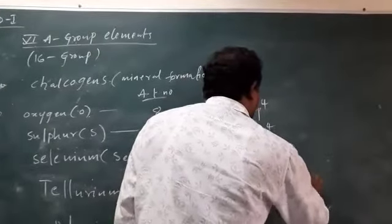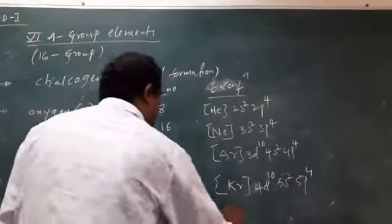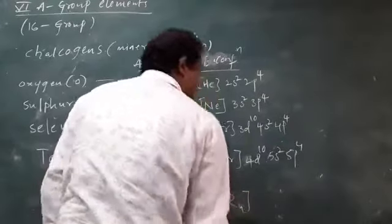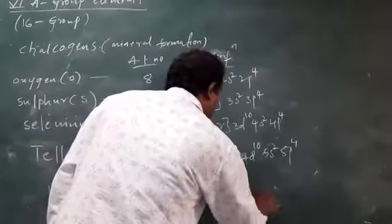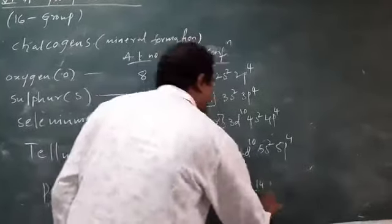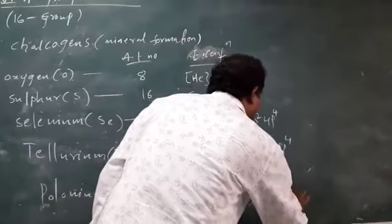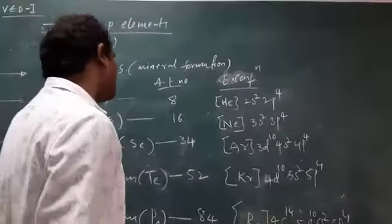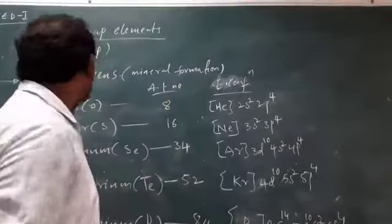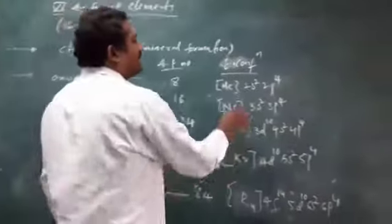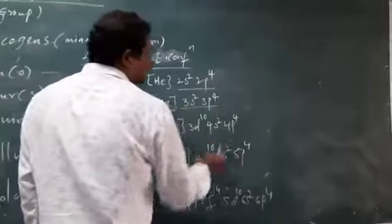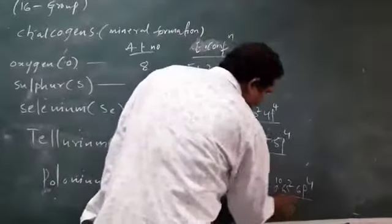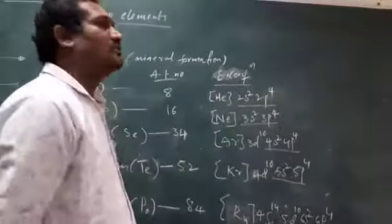And for Polonium after Xenon, 4f14 5d10 6s2 6p4. So all the 6p elements have 2s2 2p4, 3s2 3p4, 4s2 4p4, 5s2 5p4, and 6s2 6p4 configuration.